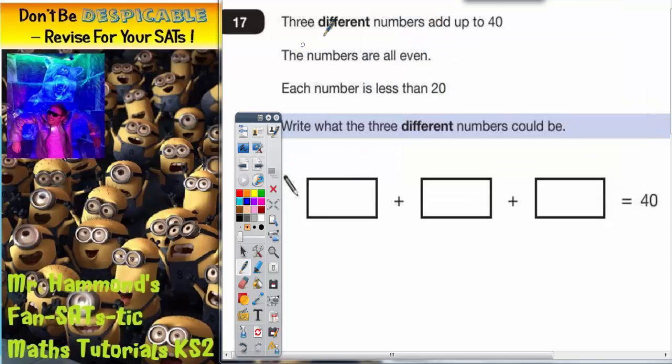Question number 17. Three different numbers add up to 40 and they have got to be different. The numbers have got to all be even and each number must be less than 20. So write what the three different numbers could be.